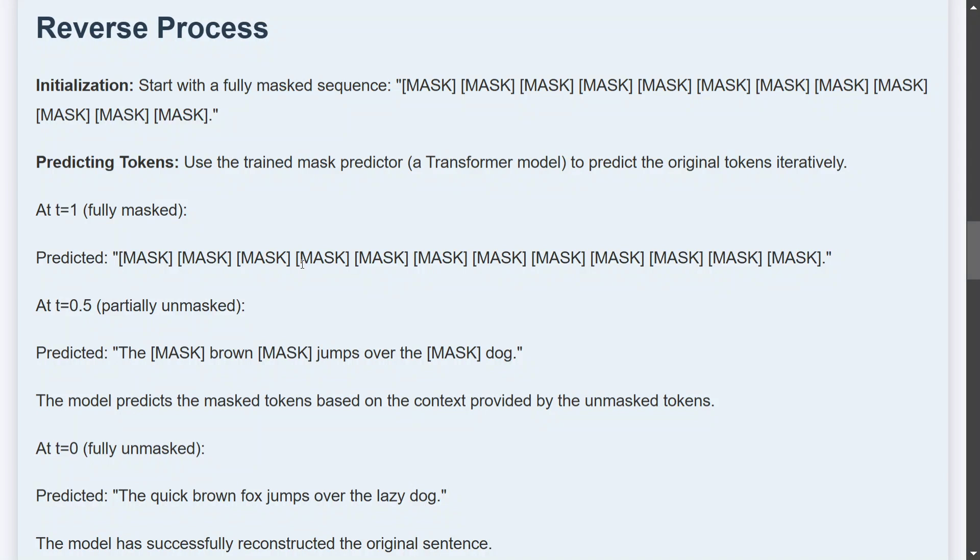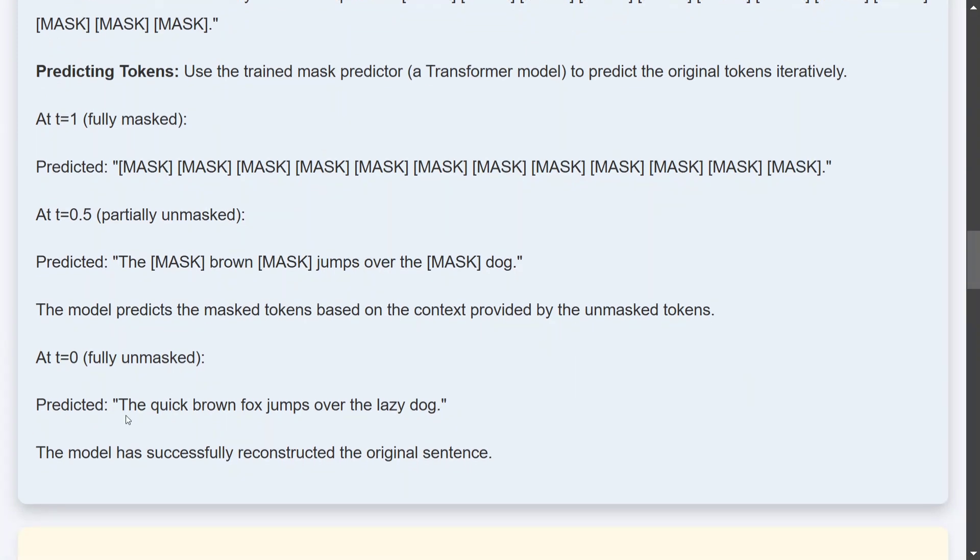In case of LLDMs, that won't be the case. You would be predicting random tokens. And at t equals to zero, you would be getting a full sentence again. This is how it works, quite easy. Instead of just adding noise, we are adding mask. That's the only difference.